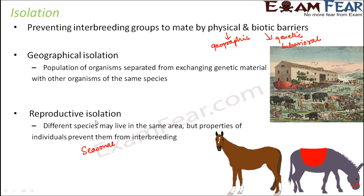Similarly, there is gametic isolation. Gametic isolation means it is possible that the gametes of two different groups of organisms are not compatible with each other. Since the gametes are not compatible, they do not fuse together, so fertilization doesn't happen, and therefore reproduction doesn't happen. That is gametic isolation.